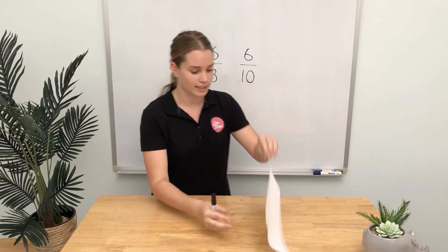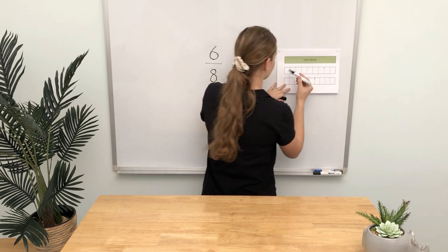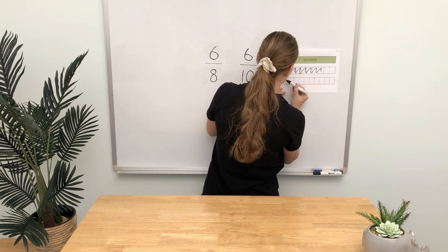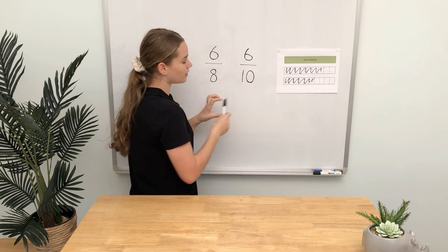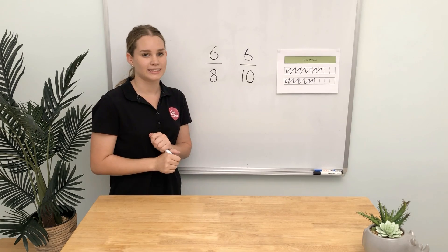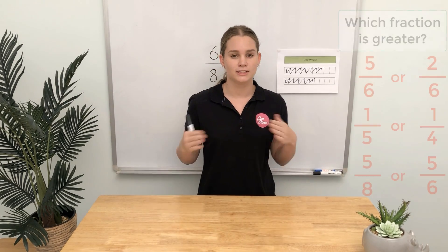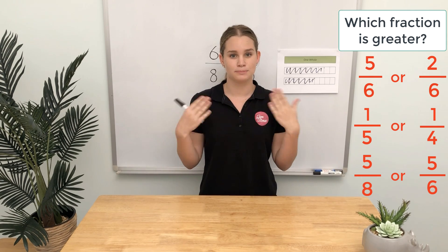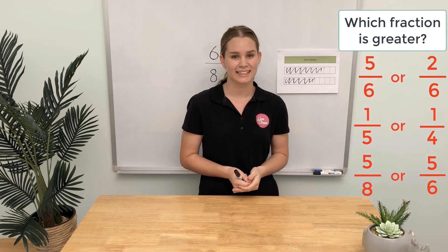Let's check that one out. We have six-eighths and six-tenths — we can tell that six-eighths is larger than six-tenths. My challenge to you is to find out which fraction out of the pairs is bigger. I'll show you them up on the board now. Thanks.